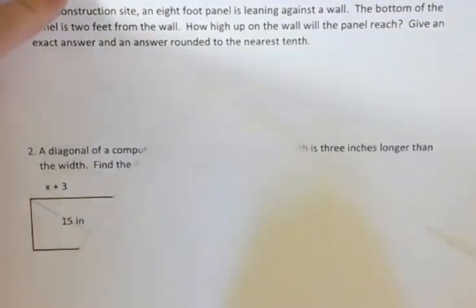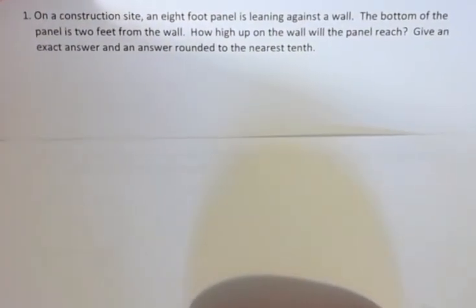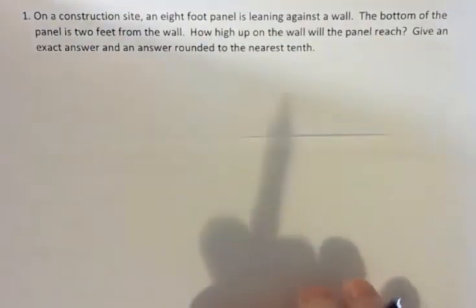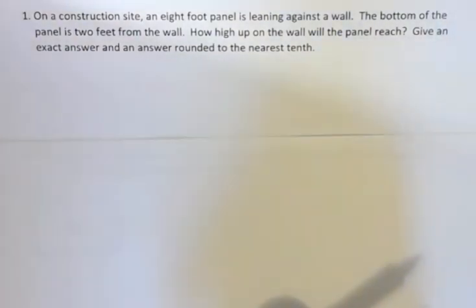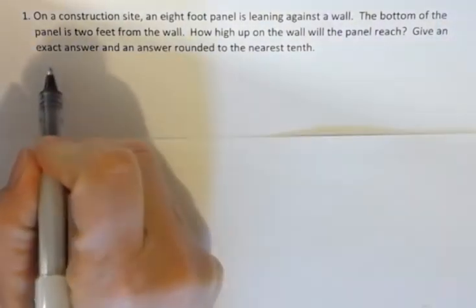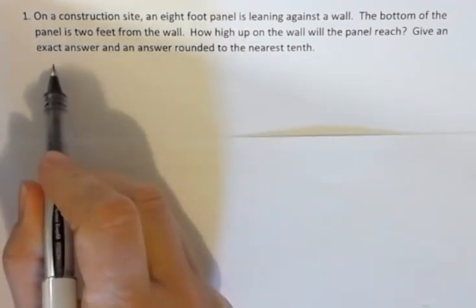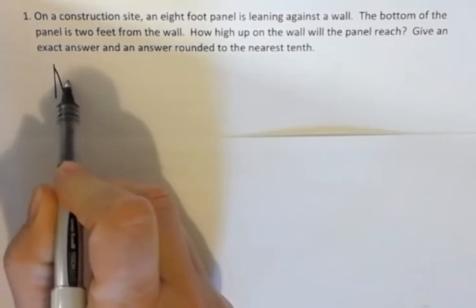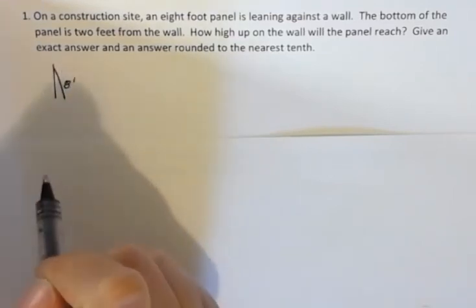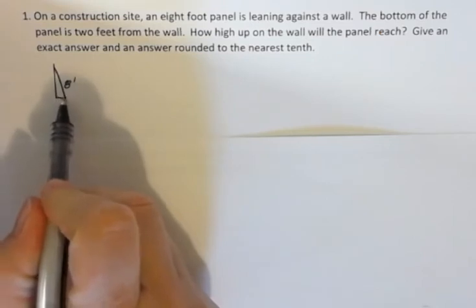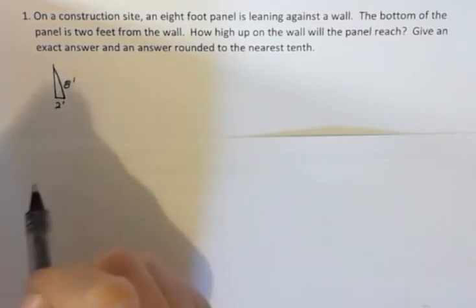Well, I didn't draw a picture for this one ahead because I'm going to say we should always draw a picture to make sure we understand what we're talking about. So here's the wall and there's an eight-foot panel that's leaning against the wall. So let's go ahead and mark that as eight feet and the bottom of that panel is just two feet from the bottom of the wall.